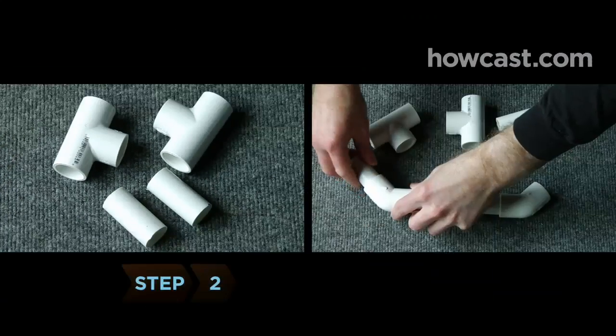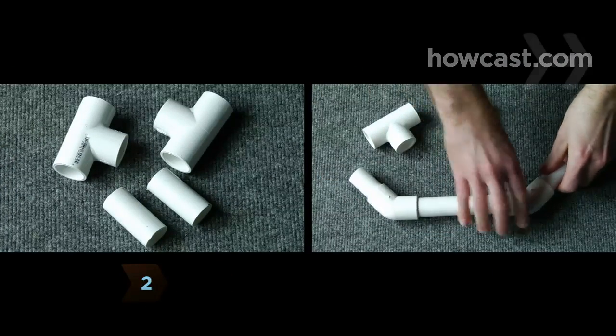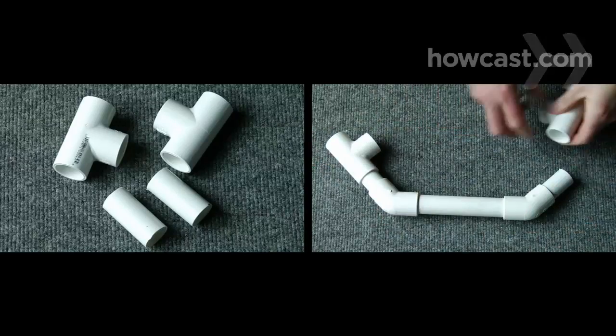Step 2. Add a piece of 2.5-inch PVC pipe to each connector's open end, and then attach a T-connector to both.